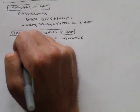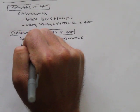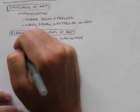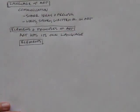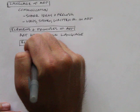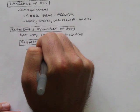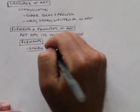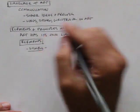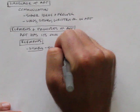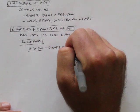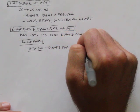So, elements of art. Here are some elements of art. One is a symbol. This symbol stands for or represents something else.